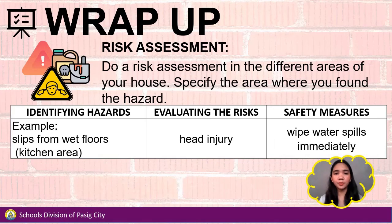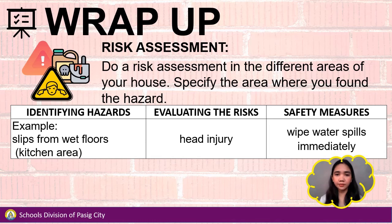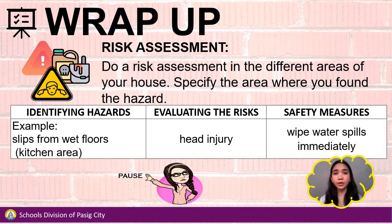To wrap it up, you will do a risk assessment again, but this time in the different areas of your house. Specify the area where you found the hazard. For example: hazard — slips from wet floors, identified in the kitchen area — then identify the risk and the safety measures. Pause the video and work on your activity, and play the video when you're done.